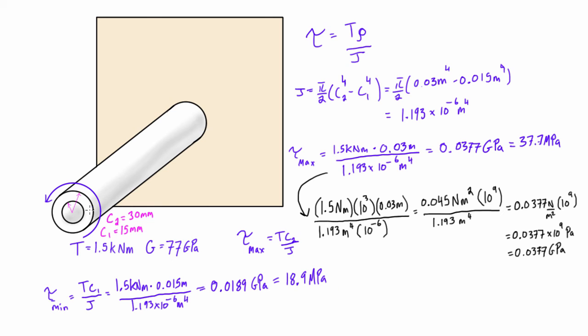And that is equal to 18.9 megapascals. So this is the shear that we're basically feeling on the inner wall here, which happens to be our minimum shear. Now there is another way that we can calculate minimum shear. The other expression for minimum shear that we can write is τ_min is just equal to the ratio of c1 over c2 times the maximum shear. So in this case we know the maximum shear and we know c1 and c2. So we have c1 is 0.015, c2 is 0.03, and the max shear was 37.7 MPa.